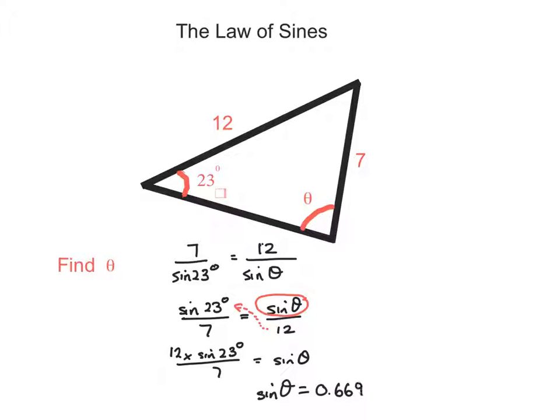And then I'm going to add a couple more decimal places, 247, because I want to find theta, and you find theta by pressing the sine negative 1 button on your calculator. And obviously put all those decimal places in, 9, 8, 2, 4, 7, and you get theta equals 42.05 degrees.